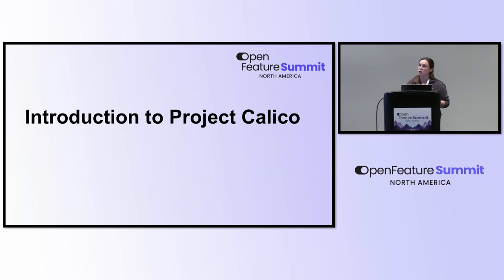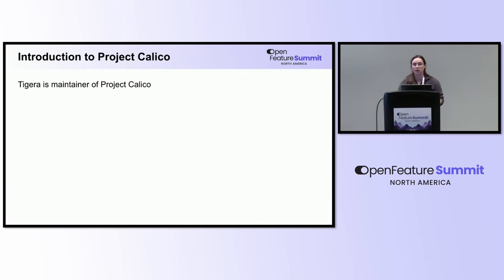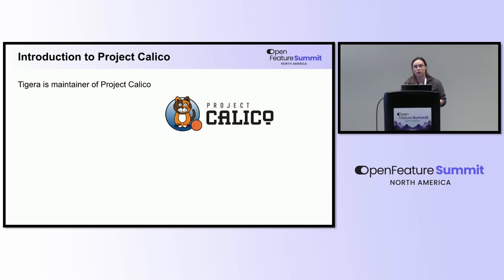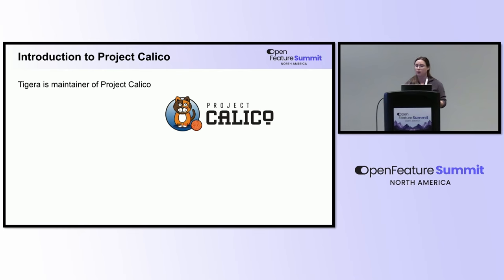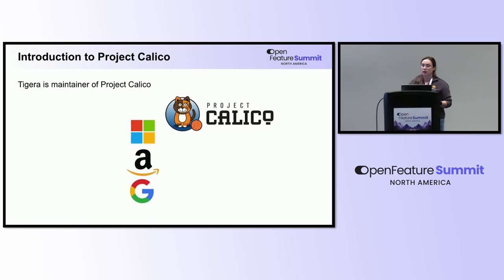Starting with an introduction on Project Calico: it's an open source networking and network security solution, usually associated with cloud computing and Kubernetes — but Calico can also run on bare metal and virtual machines. Calico can run anywhere and provide the same features in every environment. It's free and open source, integrated and supported in almost every cloud provider environment, with big names such as NASA, Reddit, CoreWeave, and Walmart using it to secure their environments.